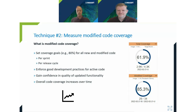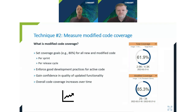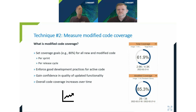Modified code coverage gives you confidence that the functionality you're writing works well. If you have a new project meeting your goals, it can be hard to notice if a team skipped testing for one sprint. Modified code coverage helps you measure whether the team wrote the appropriate level of tests for that sprint. It also works for new projects — not just legacy. It allows you to build in good development practices you want to enforce on your teams.